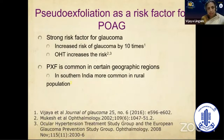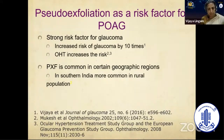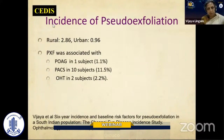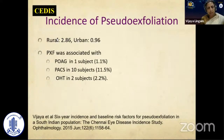Looking at exfoliation as a risk factor for glaucoma in population-based studies from India and elsewhere, it is found to be a very strong risk factor, increasing the risk of glaucoma by almost 10 times. Ocular hypertension associated with exfoliation is an important risk factor. It has a wide geographical distribution. In India, it is more common in southern India, particularly in rural populations, and our studies found that incidence is also higher in rural than urban populations.